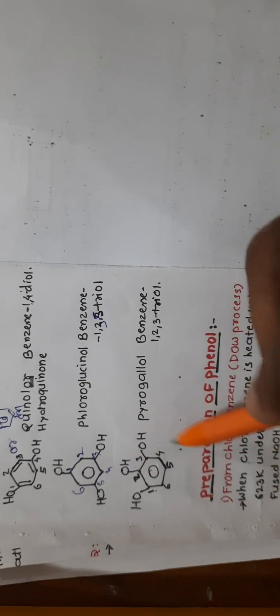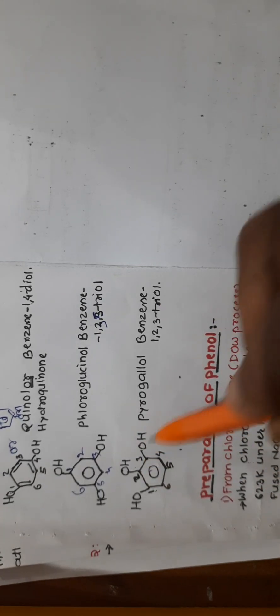Benzene-1,2,3-triol is the IUPAC name for pyrogallol. That is all regarding the nomenclature of phenols. In the next lecture, we will see the preparation of phenols. Today we will stop here. Thank you.